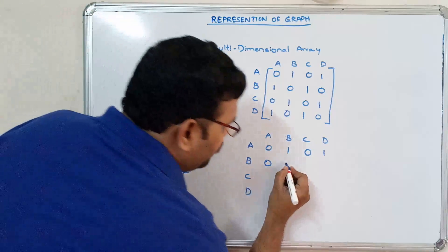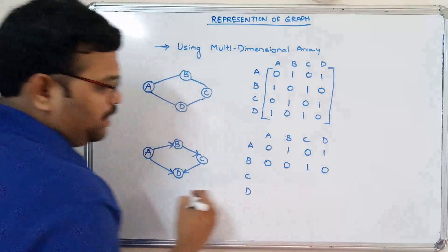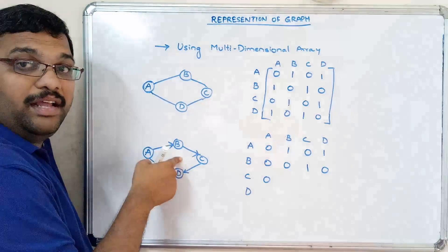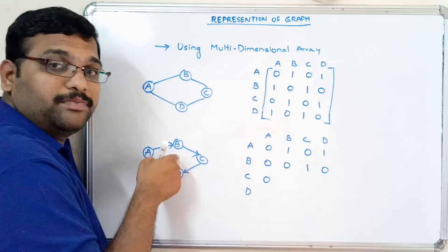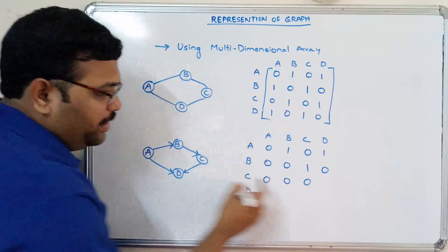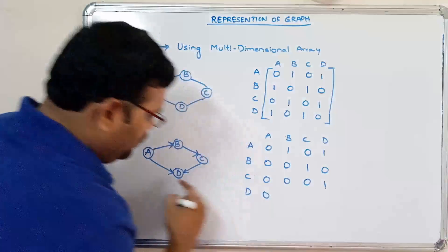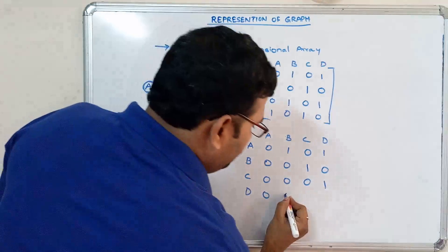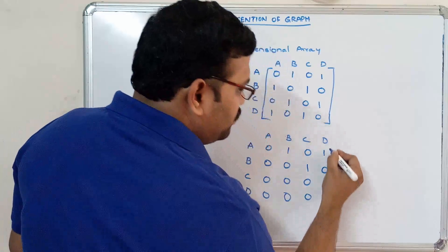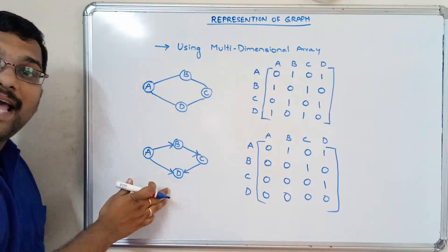B to B — zero. B to C — it's one. B to D — zero. Similarly, C to A — zero. C to B — again it's unidirectional, and that edge is from B to C, not from C to B — zero. C to C — zero. C to D — one. D to A — it's unidirectional, so zero. D to B — zero. D to C — zero. D to D — zero.